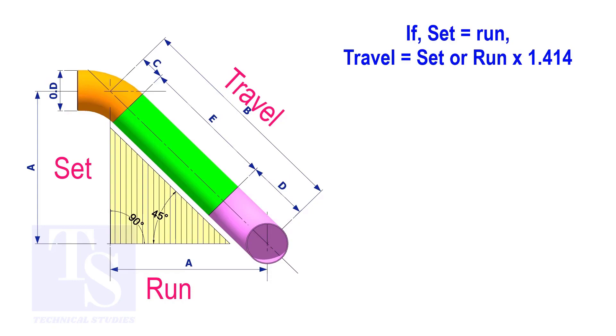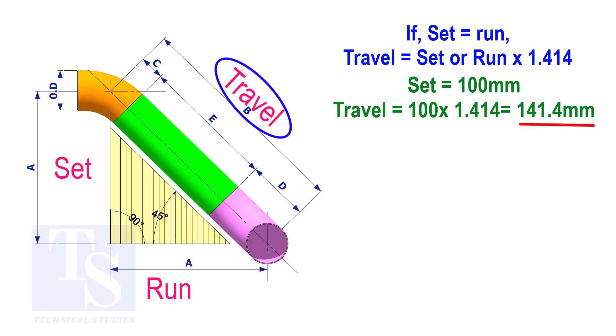Assume that the value of the set is 100. The value of the travel is 100 multiplied by 1.414 equals 141.4.